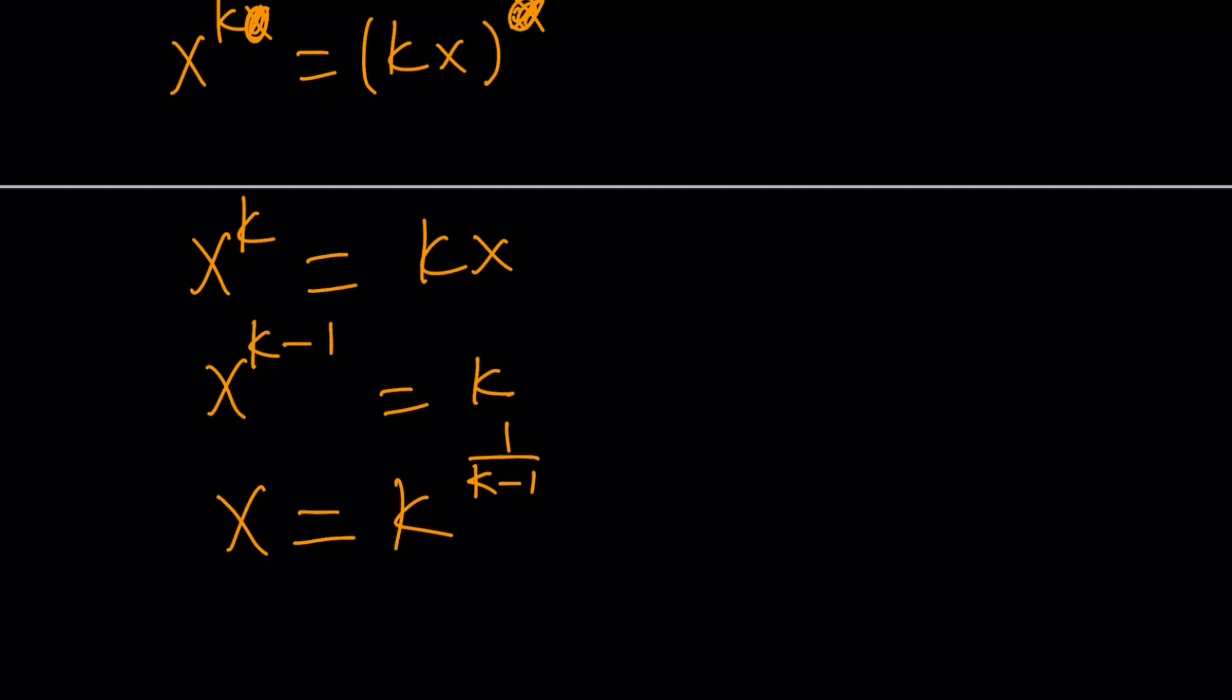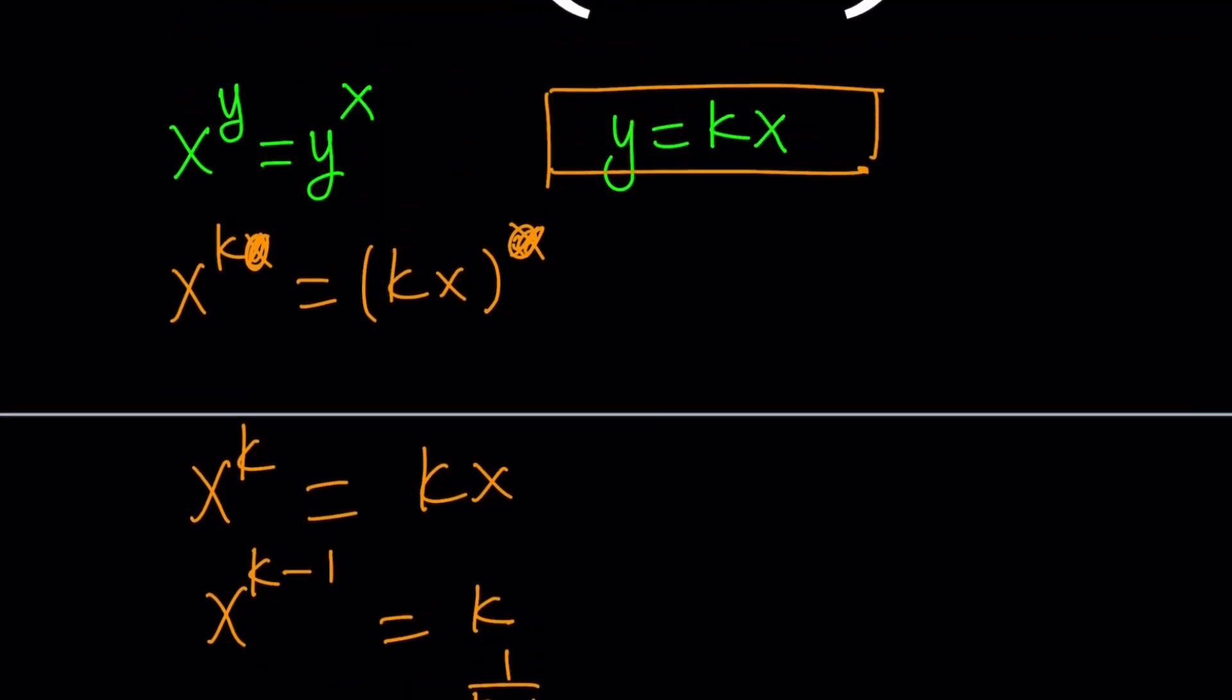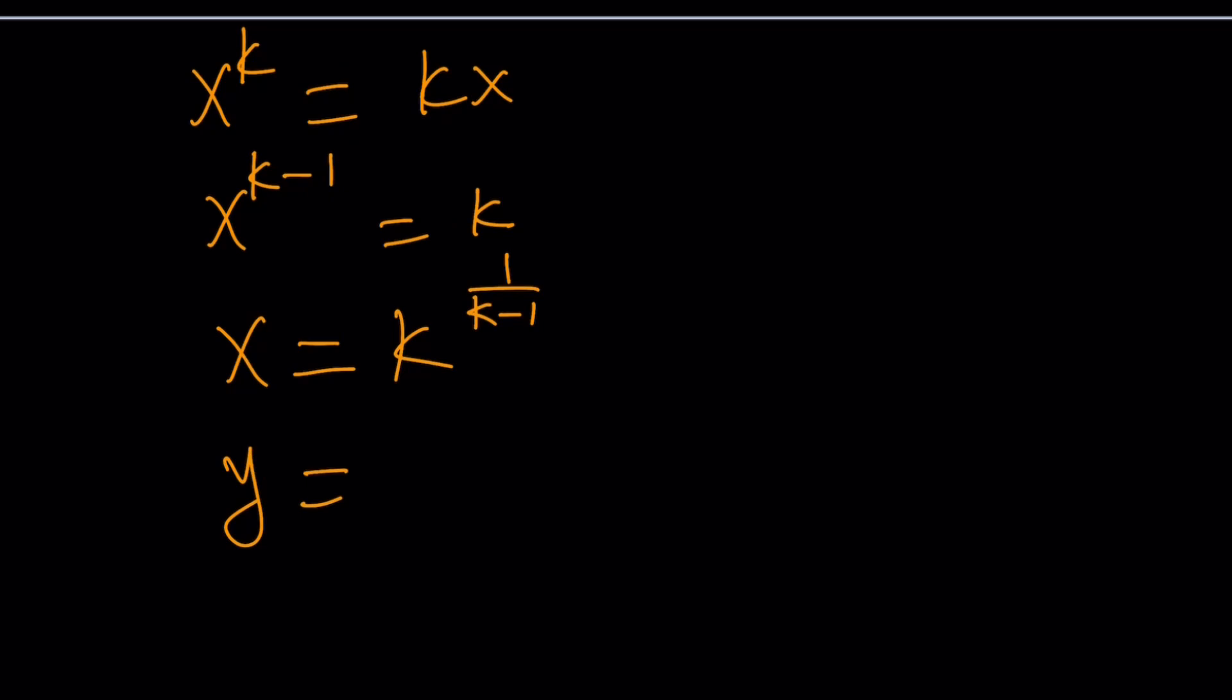And of course, since y is what? kx, multiply this by k, it's just going to add 1 to the exponent, and it's going to be k over k minus 1. And you're going to realize this also gives you that y equals x to the power k, which is kind of interesting, right?